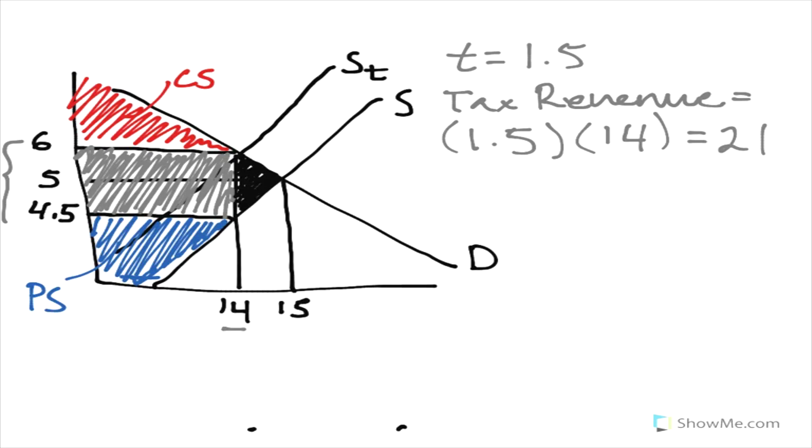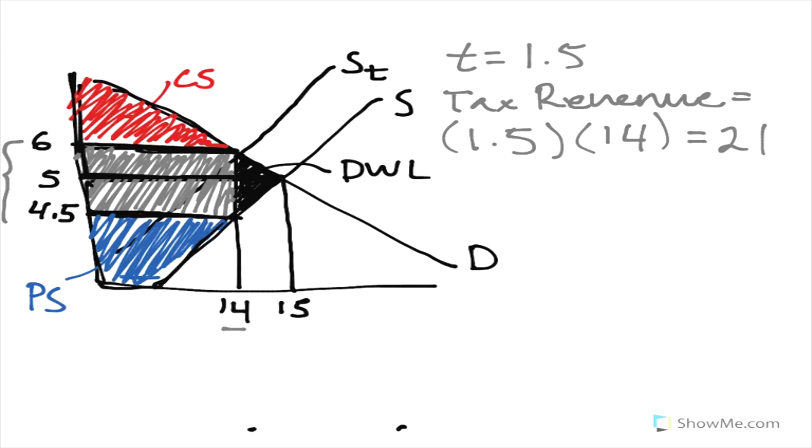Okay, now for dead weight loss, which is going to be this black area here. Recall producers originally got this whole surplus down here. Consumers originally got the whole surplus up here. And now, the consumers face this higher price of 6. Producers at 14 units face a marginal cost of 4.5. So we have this red area is the new consumer surplus. We have this blue area is the new producer surplus. We know that the gray area from before is the tax revenue. And so the only part unaccounted for is this dead weight loss, and that is just the sheer loss from adding a tax. The tax revenue isn't part of the loss because it's still staying within the economy.